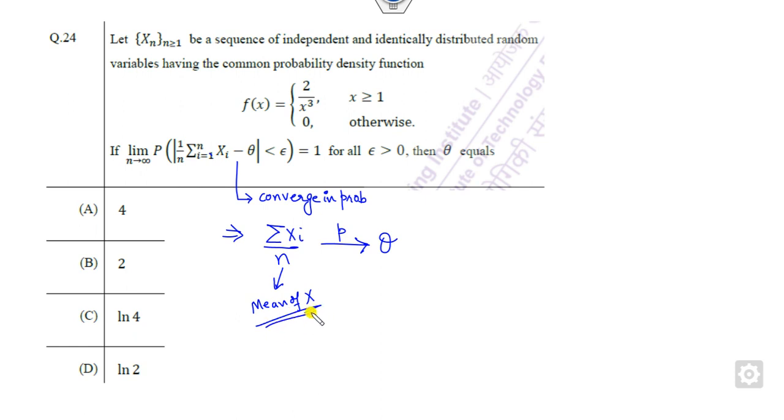What is that? This is nothing but the mean of the X_i's, mean of the X. It means theta is nothing but my expected value of this X. How can you find this? The probability density function is given to you, they are IID, so can you find the expected value of this?